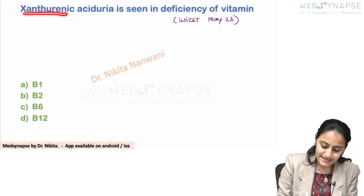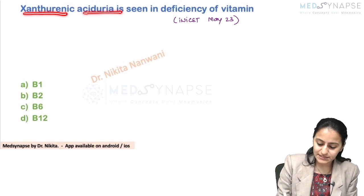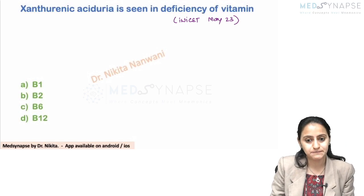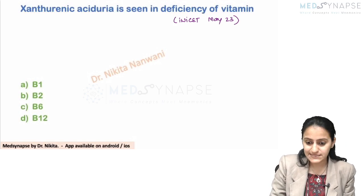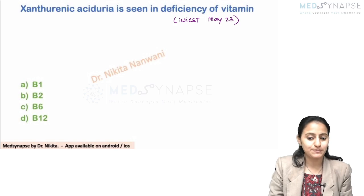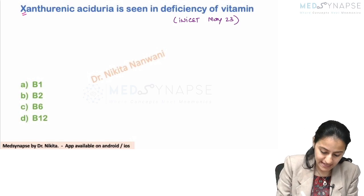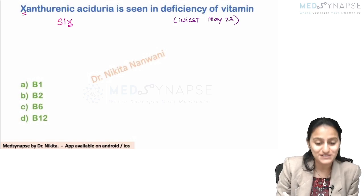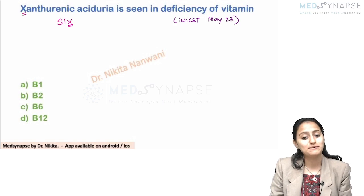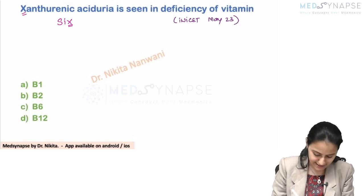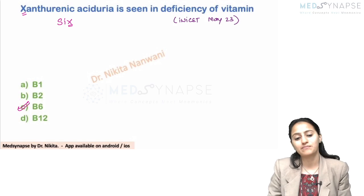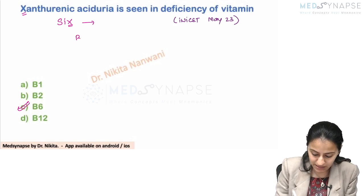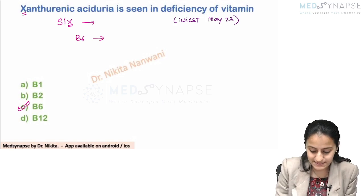The question is: xanthurenic aciduria is seen in deficiency of which vitamin? The easy trick to remember here is that xanthurenic has an X in it, and it is seen in deficiency of vitamin B6. That's an easy one — just remember the mnemonic B6.